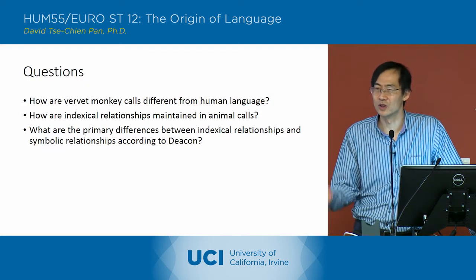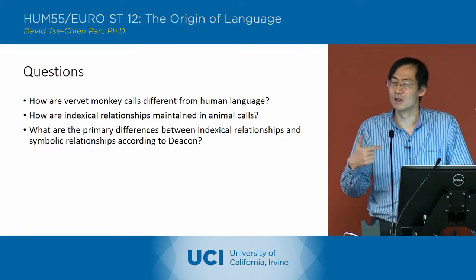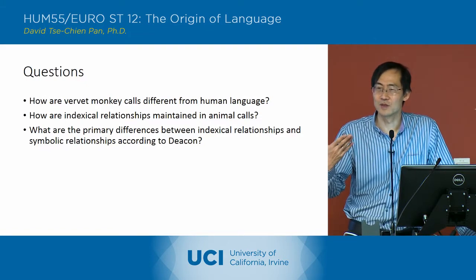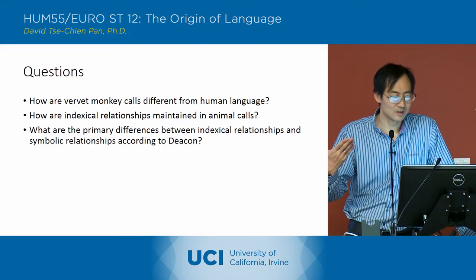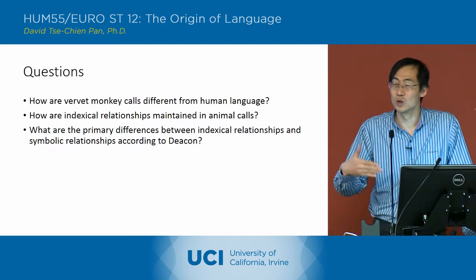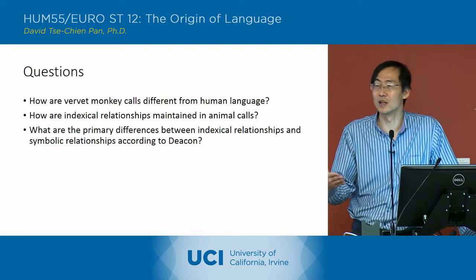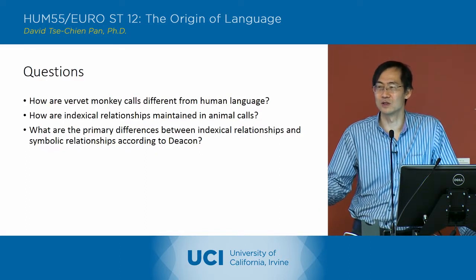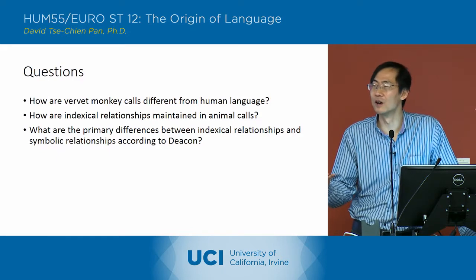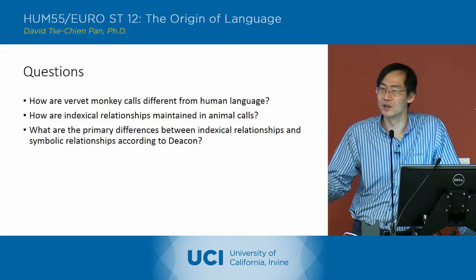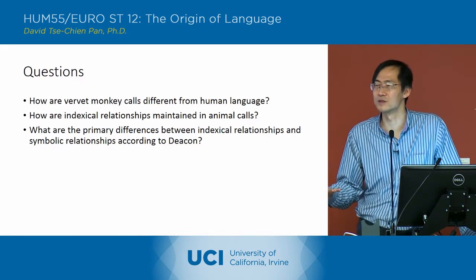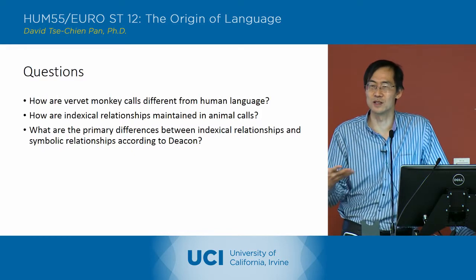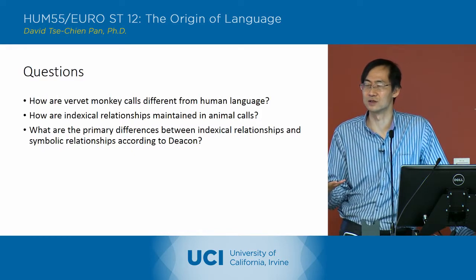Another difference is that because of that correlation, the vervet monkey calls will lose their meaning if that physical presence of the referent disappears. Whereas with human signs, that's not the case.